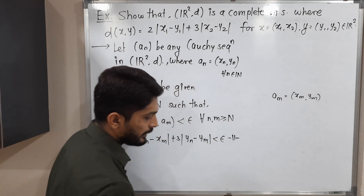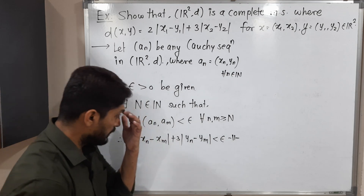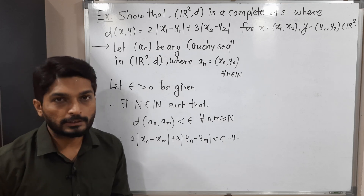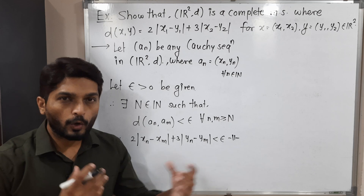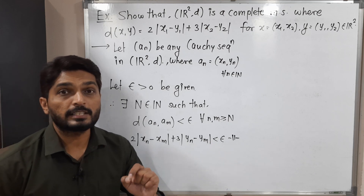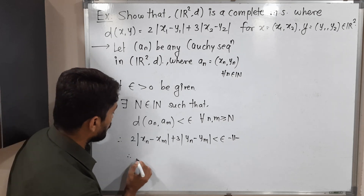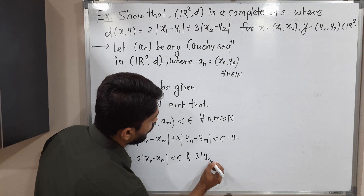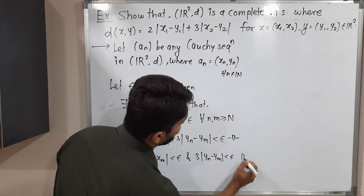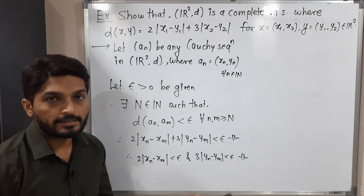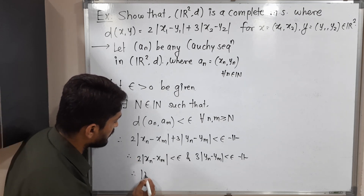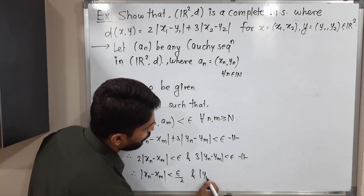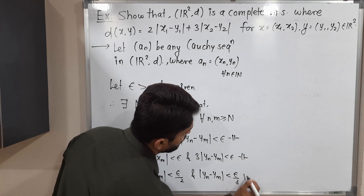Since the absolute values are non-negative and 2 and 3 are positive real numbers, we are adding non-negative terms and getting less than ε. That means each term is less than ε. Therefore, 2|xₙ - xₘ| < ε and 3|yₙ - yₘ| < ε. Shifting the coefficients, we get |xₙ - xₘ| < ε/2 and |yₙ - yₘ| < ε/3, both for all n, m ≥ N.